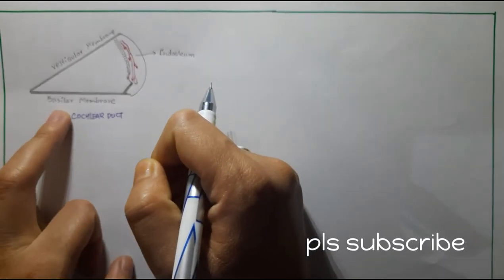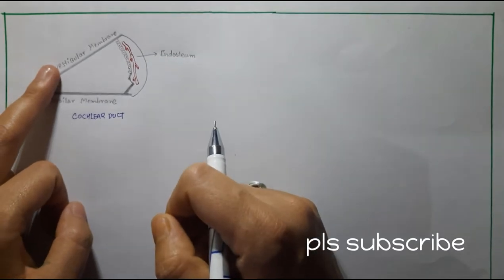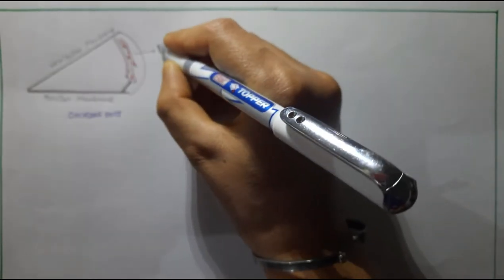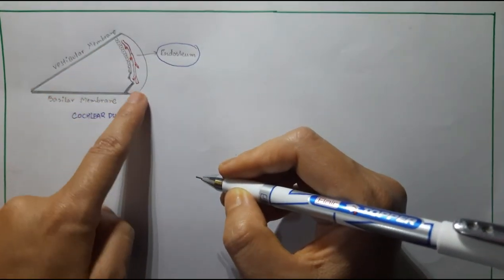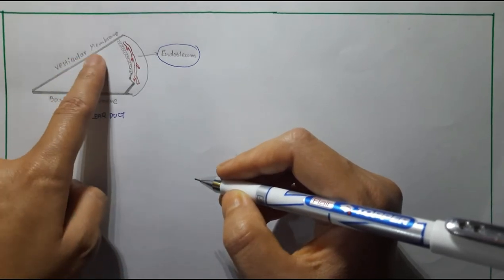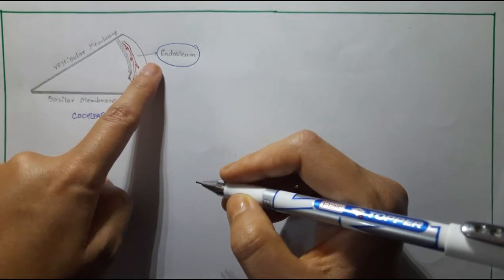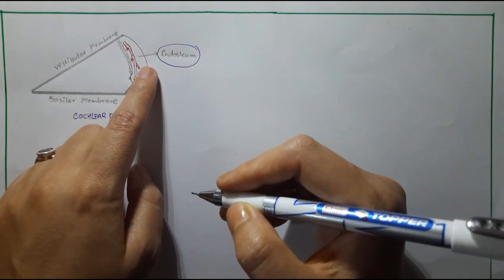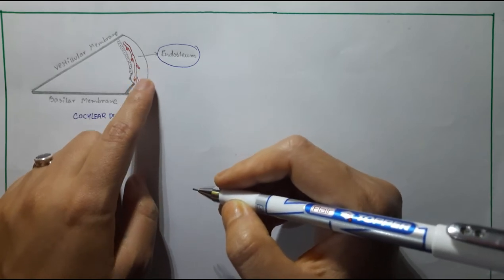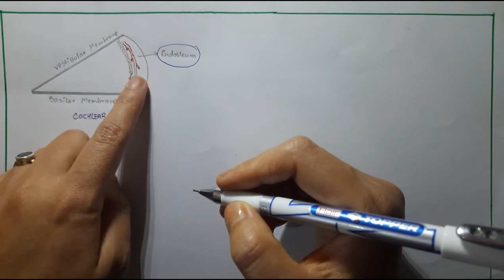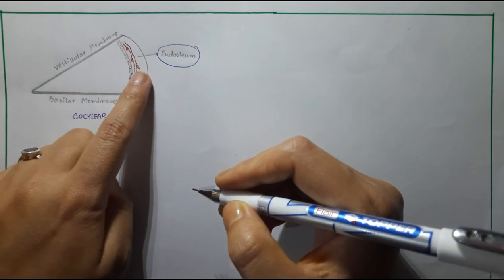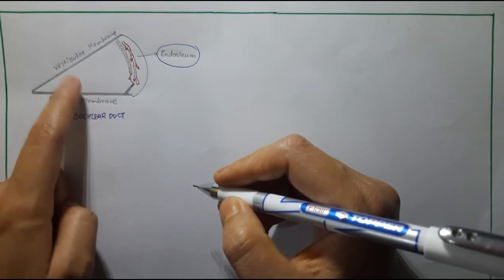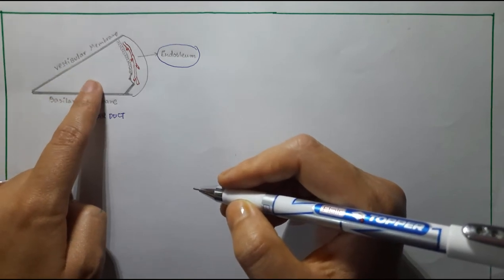The cochlear duct is a triangular canal. It lies between the basilar membrane and the vestibular membrane. Its outer wall is made up of a bony structure called endosteum. This triangular structure is composed of the basilar membrane, vestibular membrane, and the endosteum forming the outer wall. The cochlear duct is filled with endolymph, and the organ of Corti lies on the basilar membrane.